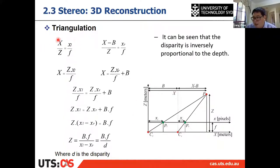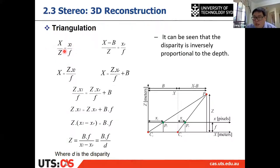The equation for Y is the same structure: Y / Z = yL / f. After you have capital Z, substitute it in to calculate capital Y as well. Then you have calculated X, Y, and Z — that's the triangulation.